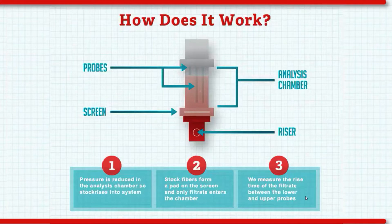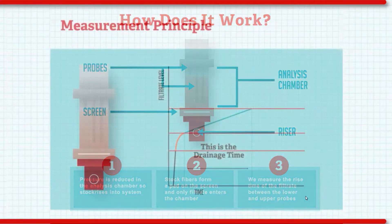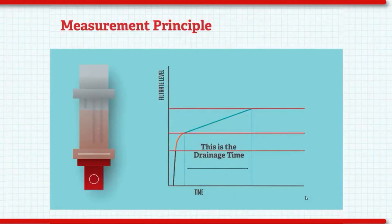We measure the amount of time it takes that filtrate to fill a specific volume. If we were to plot the height of filtrate in the riser as a function of time, this is what it would look like. The stock rises quickly at first because there's nothing to impede it. When it hits the screen, the fiber pad begins to form and the response slows down. You'll note that the response isn't linear at first. This is mostly due to variable consistency and it's also the reason we don't start measuring the filtrate right away.